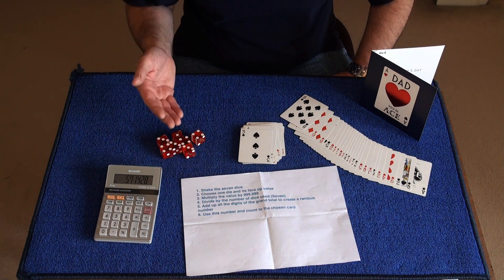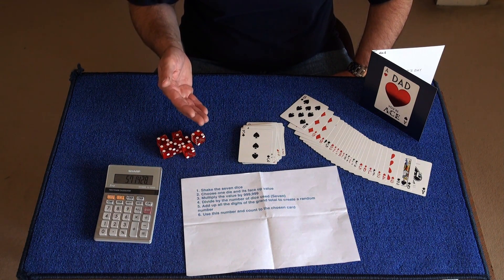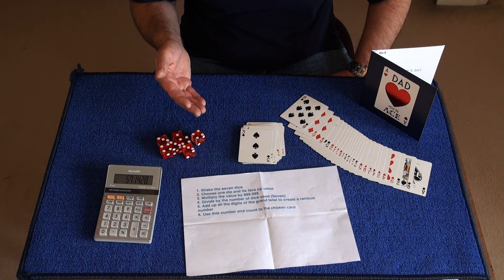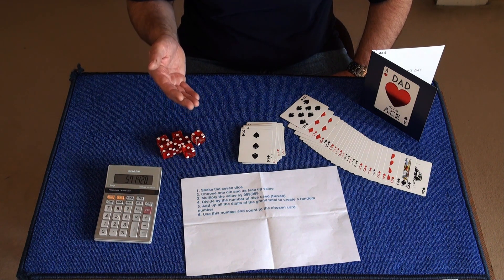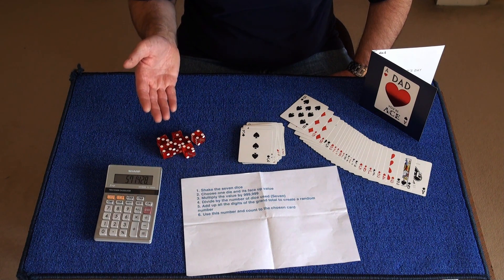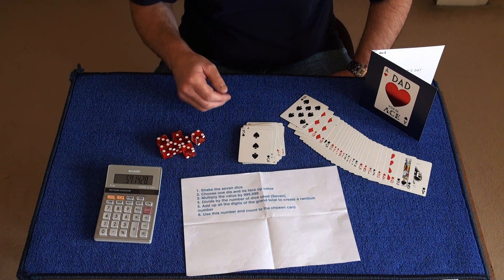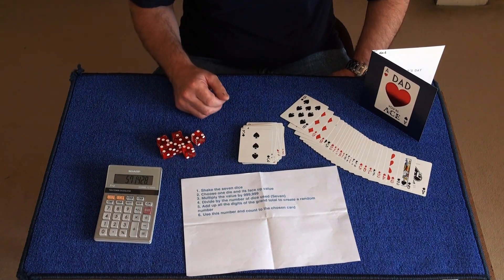And then they can multiply that number by 999,999 and then divide it by seven. That should give them a random number. Now I hope you enjoyed this, and thank you very much for watching.